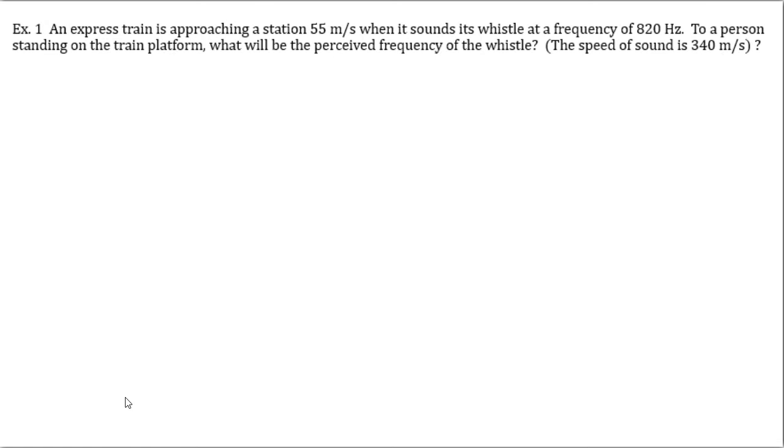Okay, there's three examples that I want you to go through and try. So at the beginning of each example, pause the video. You guys work through it and then I'll have the answer there for you. Okay, in this example, an express train is approaching a station at 55 meters per second. When it sounds its whistle at a frequency of 820 hertz to a person standing on a train platform, what would be the perceived frequency of the whistle? And the speed of sound at that time is 340 meters per second.